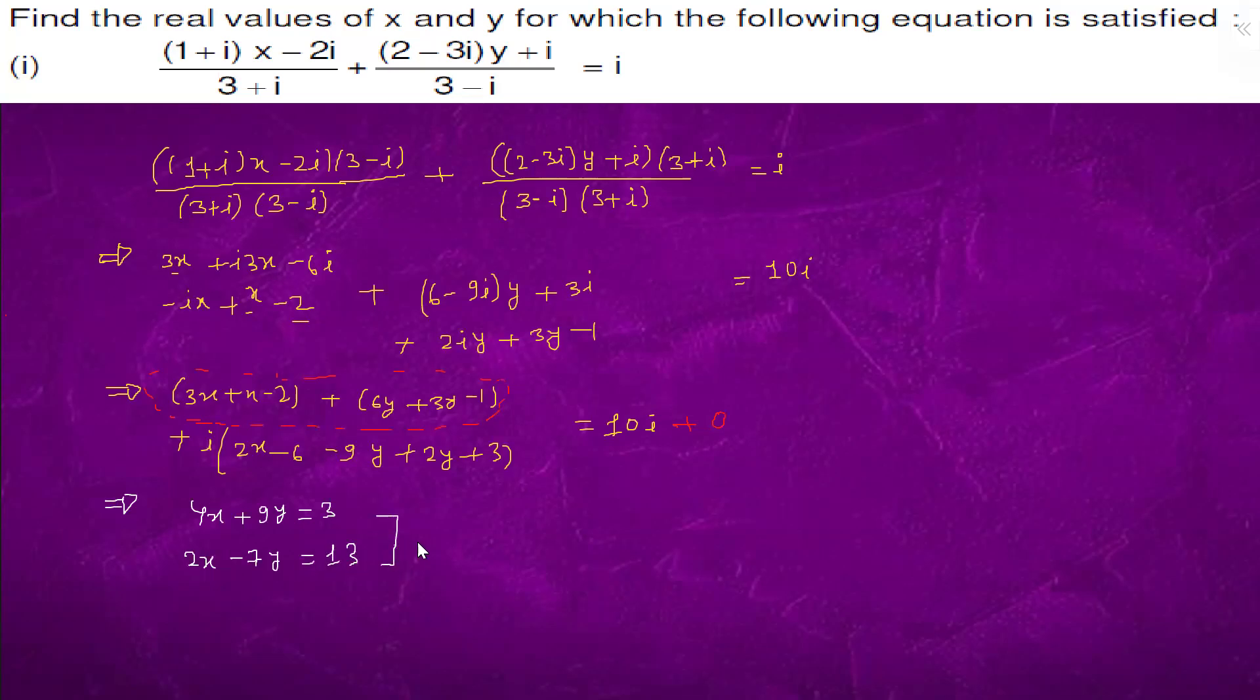So from here we will solve the equation. We have 4x plus 9y equals 3, and we have 4x minus 14y equals 26. Subtract it, and we get 23y equals minus 23.